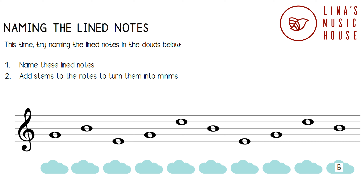You have just learned how to name all the line notes in the treble stave. Now let's add stems to the notes to turn them into minims. Remember, when the stem goes up the note looks like a D, and when the stem goes down the note looks like a P.